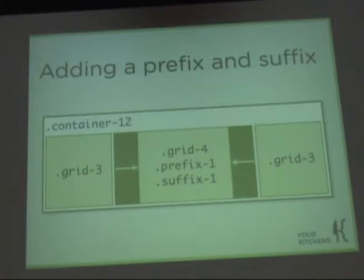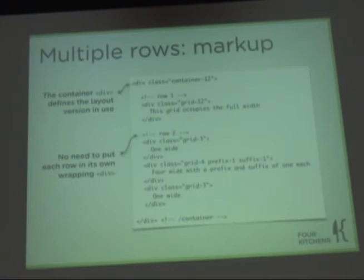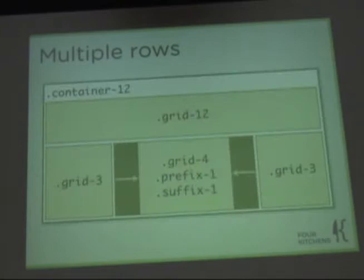If you're worried about weird float stacking when one row is taller, you can use the clear-block class that Drupal has — or in Drupal 7 it is being renamed to clearfix properly. That is included with 960. You can have multiple rows, but there's no need to put each one in its own row. This is just an example of the markup to achieve the previous slide — it's that clean, with no actual division between rows, just comments so you can see where things fall into place.